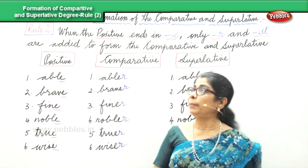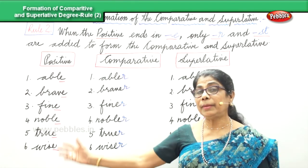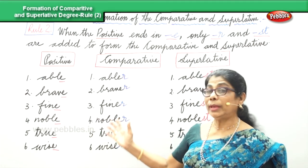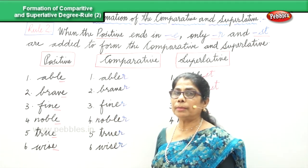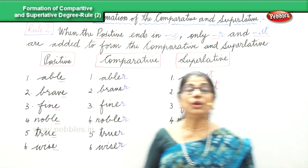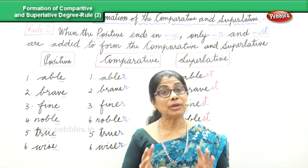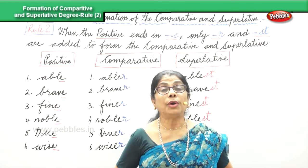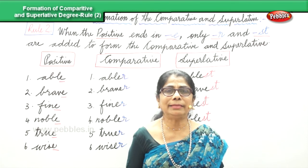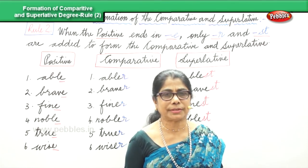We learned rule number two. In forming the comparative and superlative, if the positive ends in E, we add R to form the comparative and we add ST to form the superlative. That is rule number two — how it goes in the three degrees of comparison of adjectives.